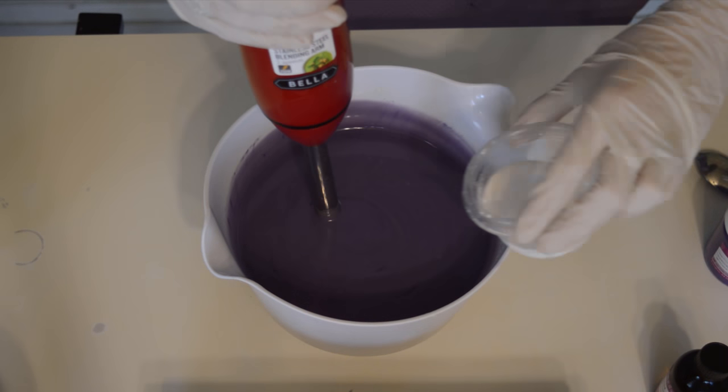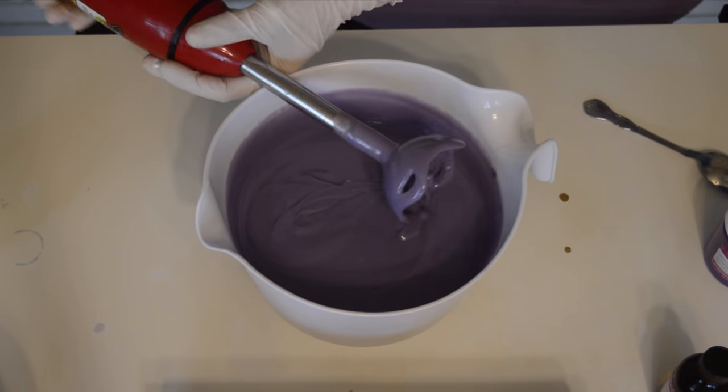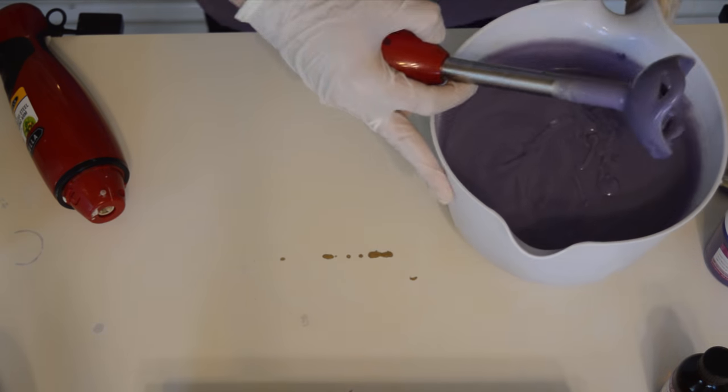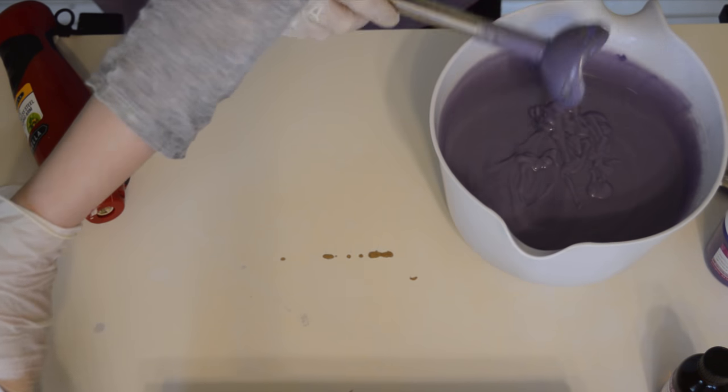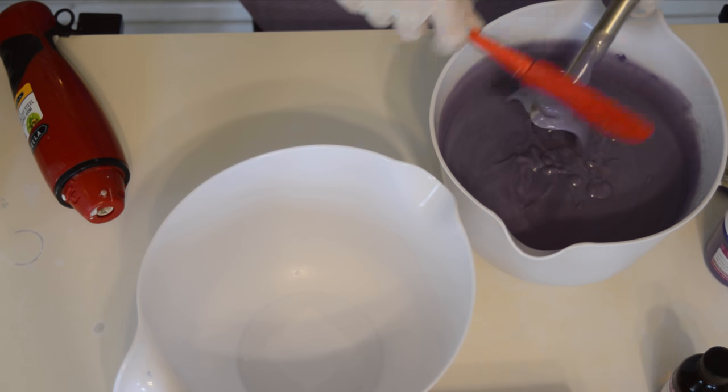And I'm going to start by adding a little bit of titanium dioxide to it. And then I'm going to work in steps. I'm going to start with the first batch of it, add the fragrance and then pour.